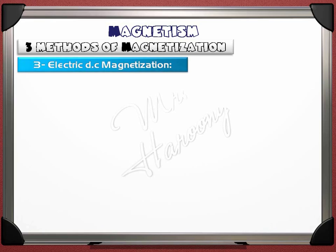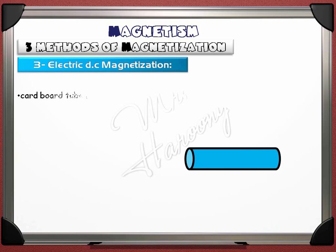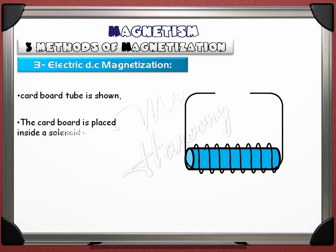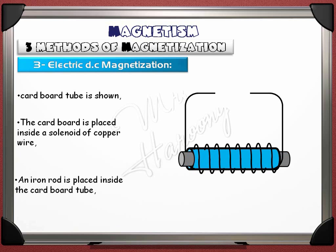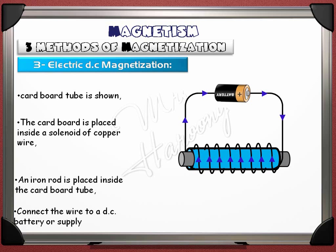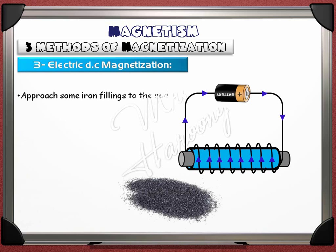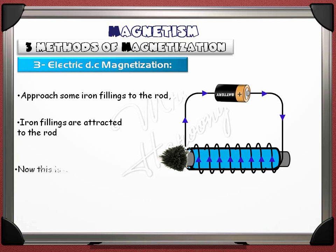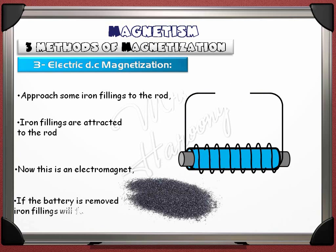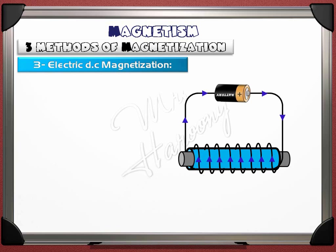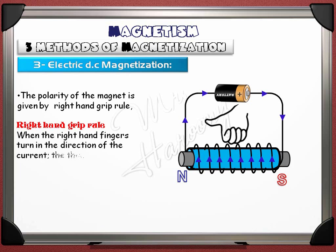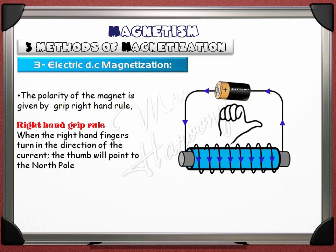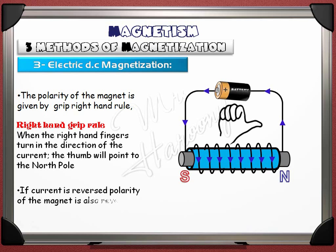The third method of magnetization is using a DC current. A cardboard tube is placed inside a solenoid of copper wire, and an iron rod is placed inside the cardboard tube. Connect the wire to a DC battery or supply. Iron filings will be attracted to the rod, making it an electromagnet. If the battery is removed, the iron filings will fall. The polarity of the magnet is given by the right-hand grip rule: when the right-hand fingers curl in the direction of the current, the thumb points to the north. If the current is reversed, the polarity of the magnet is also reversed.